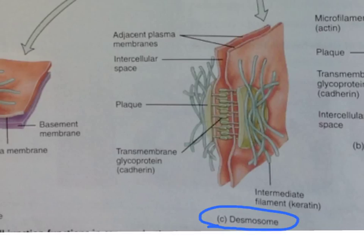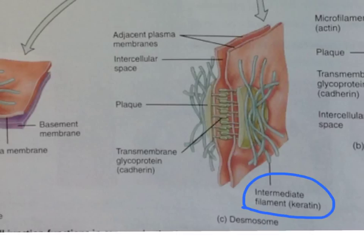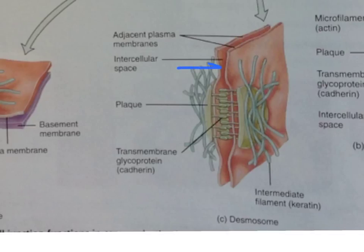Desmosomes are another type of cell junction that are similar in overall structure to the adherence junctions. They also have plaque and cadherin proteins that attach neighboring cells to each other. But instead of microfilaments, the plaques of desmosomes attach to another type of cytoskeleton protein called the intermediate filaments, which are made up of the tough protein keratin. These are strong cable-like proteins that are able to pass through the plaque. The intermediate filaments help pull the membranes of neighboring cells together. They also do not surround the entire cell like the adherence junctions do. Instead, they function like spot welds, attaching the cell membranes together at distinct points.